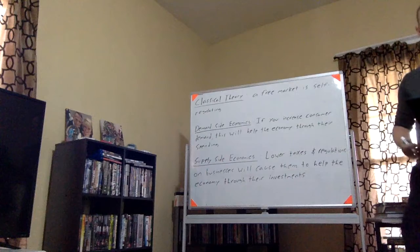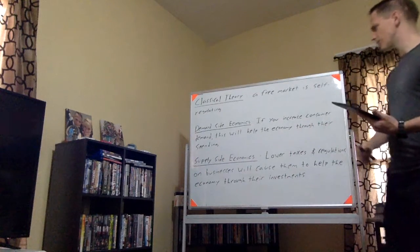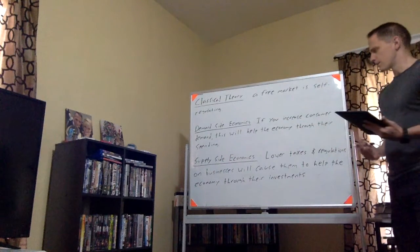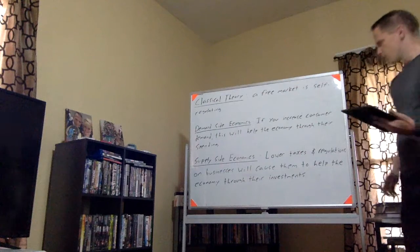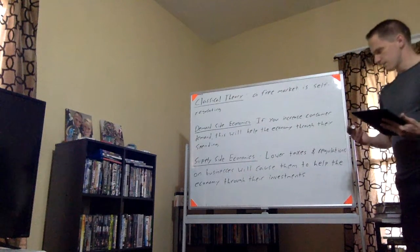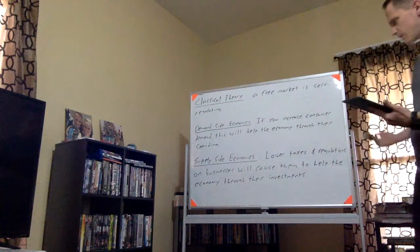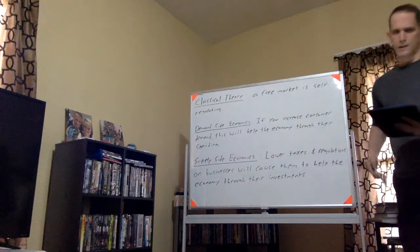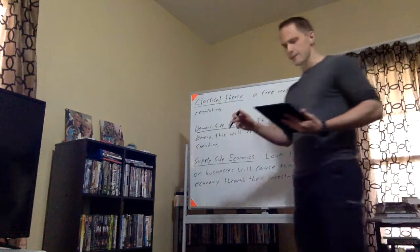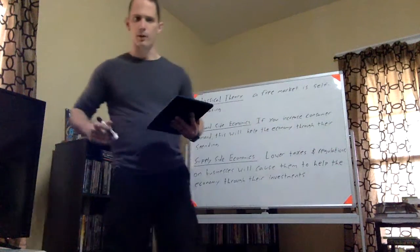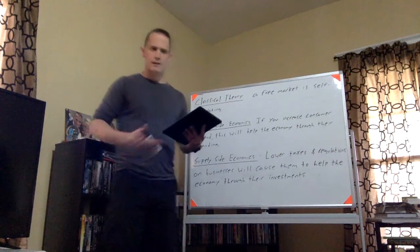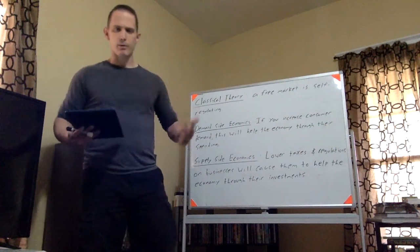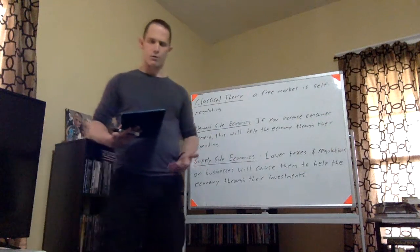So, that's demand-side economics. And then we have this kind of different approach, something called supply-side economics, where it says, if we lower the taxes and regulations on businesses, this will cause them to help the economy through their investments. And so, with demand-side economics is saying, hey, let's put more money in the pockets of everyday people. Supply-side economics is saying, hey, let's put more money in the pockets of businesses and corporations.